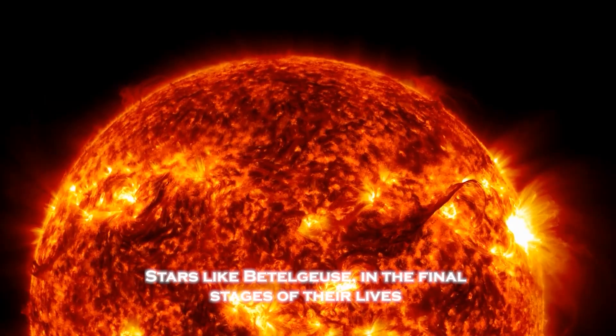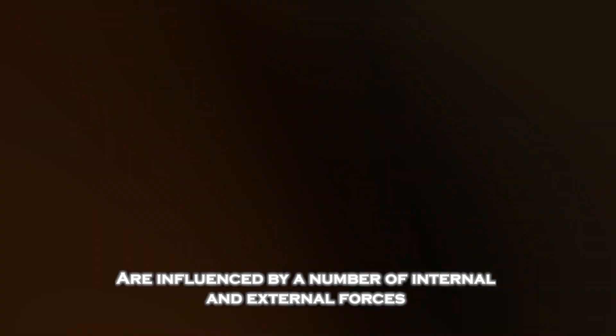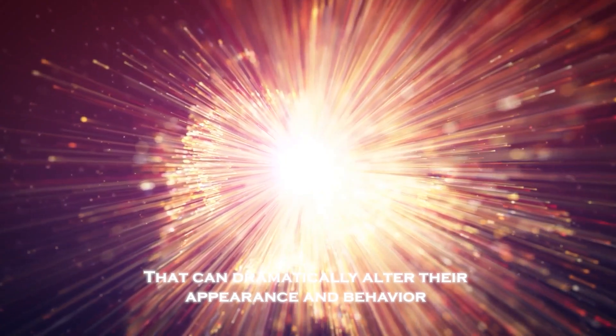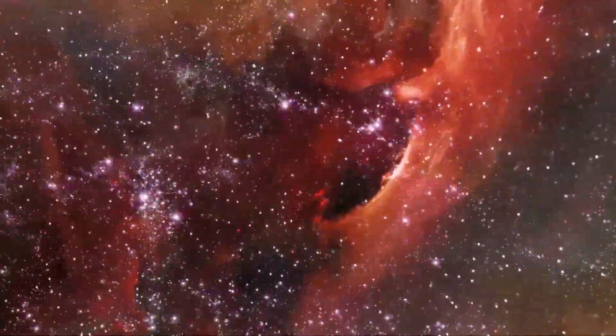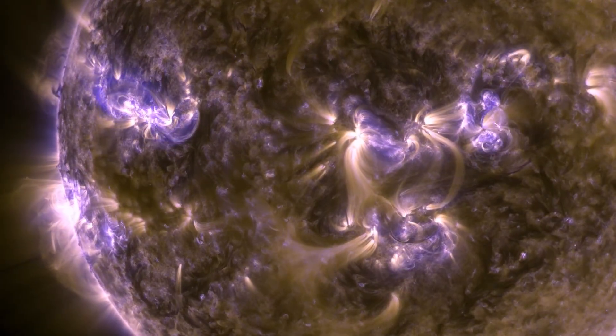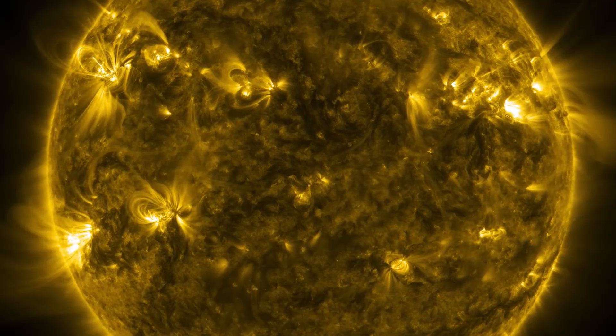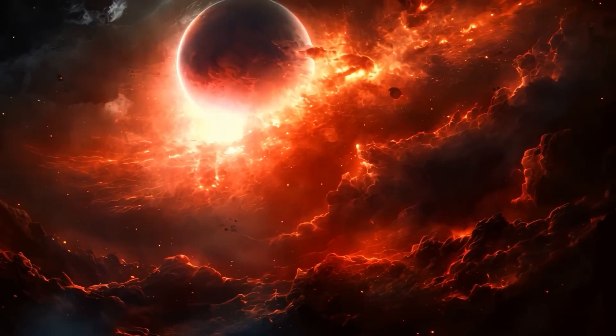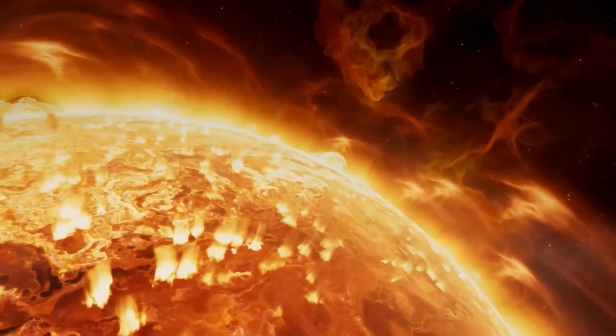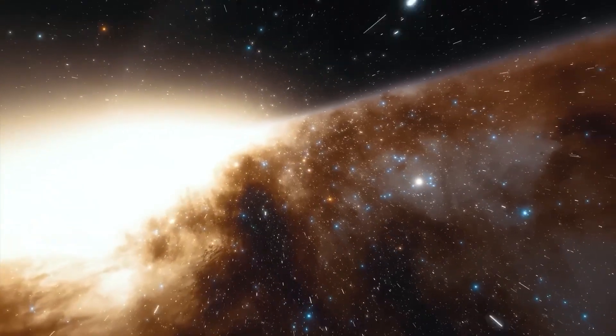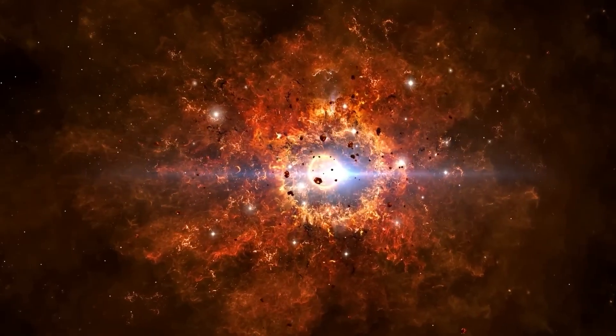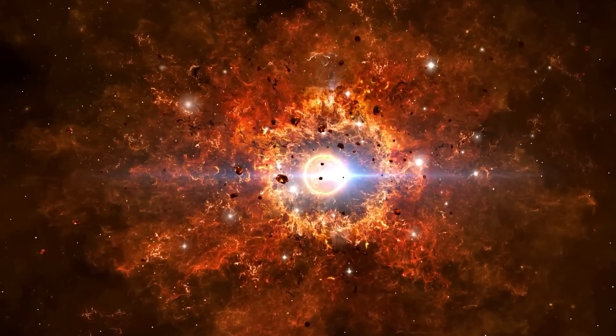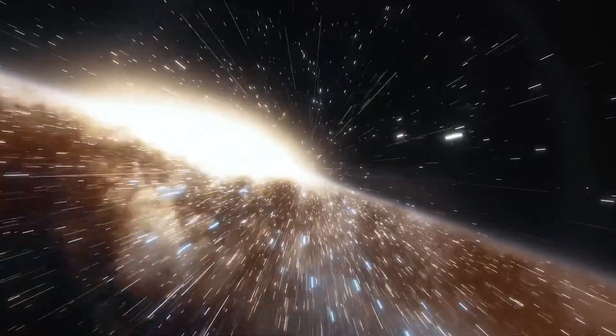Stars like Betelgeuse, in the final stages of their lives, are influenced by a number of internal and external forces that can dramatically alter their appearance and behavior. Understanding these processes is crucial not only for predicting the future of stars like Betelgeuse, but also for gaining insight into the broader mechanisms that govern the life and death of stars throughout the universe. Betelgeuse's sudden increase in brightness serves as a reminder of the powerful and unpredictable forces at work in the cosmos. Stars are not static objects; they are dynamic systems that evolve and change over time. Betelgeuse, with its rapid fluctuations in brightness, offers valuable insights into the complex and often violent processes that drive stellar evolution. As scientists continue to study this remarkable star, they are likely to uncover new insights into the forces that shape the universe.